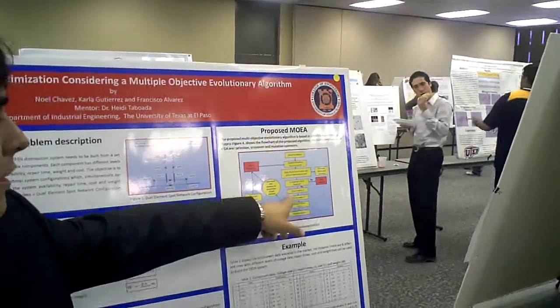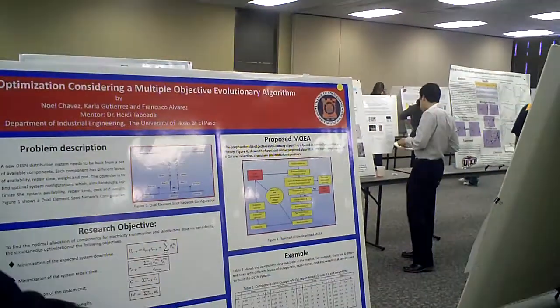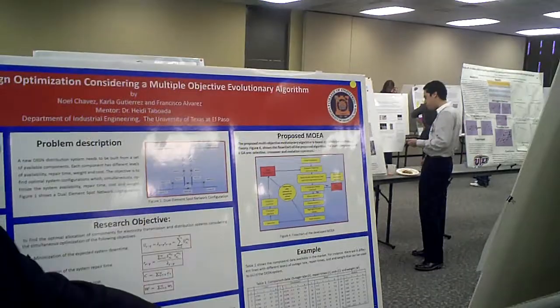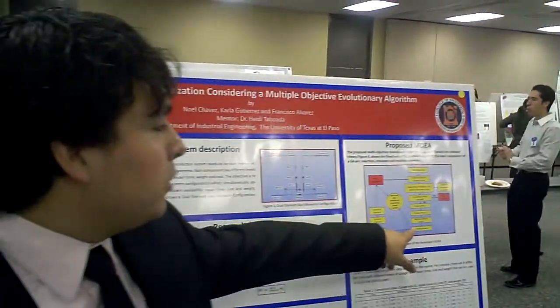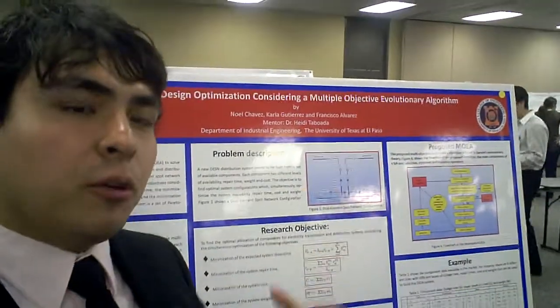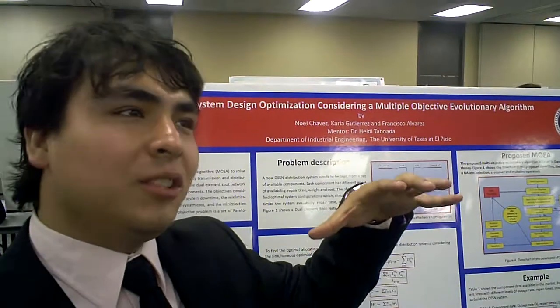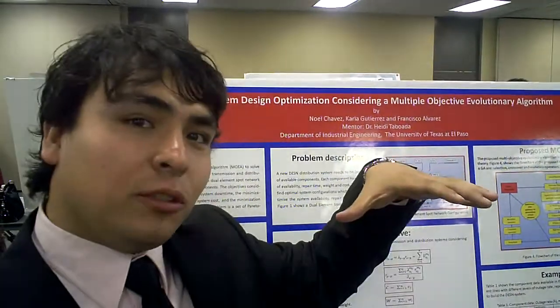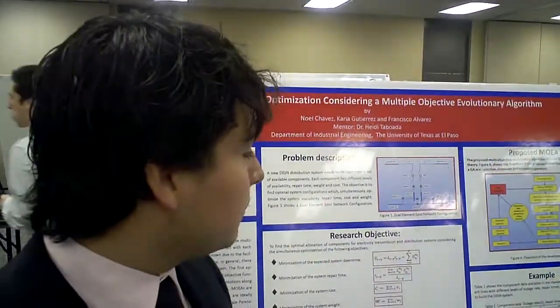So we use specific metrics one and two, which are part of the Pareto formula. We're going to write the solutions, and at the end we're going to use the better solutions to get much better solutions.